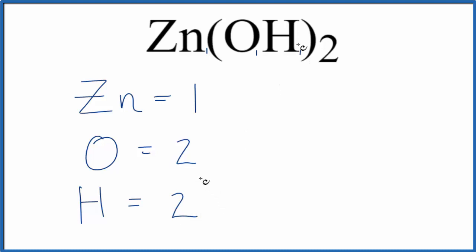If you wanted to know how many atoms there were in the whole compound here, zinc hydroxide, Zn(OH)₂, you just add these up. 2 plus 2 plus 1, so there's 5 atoms in Zn(OH)₂.